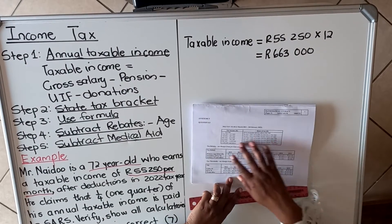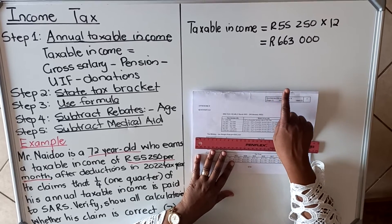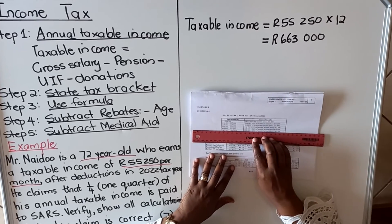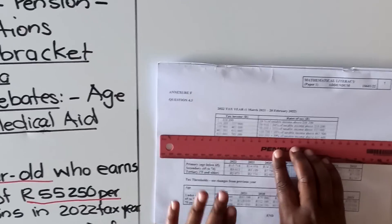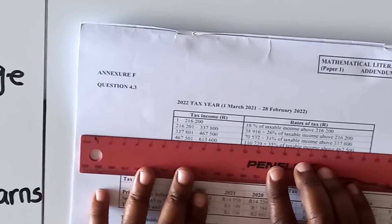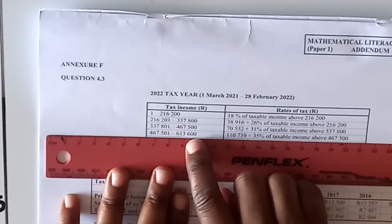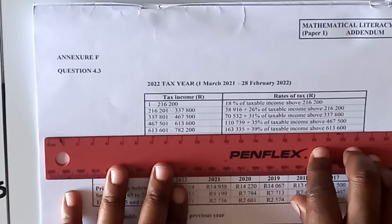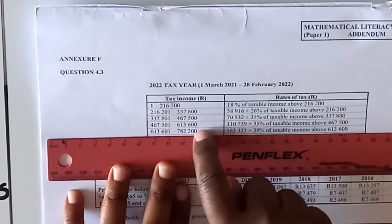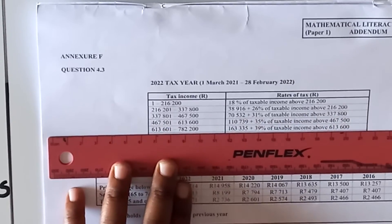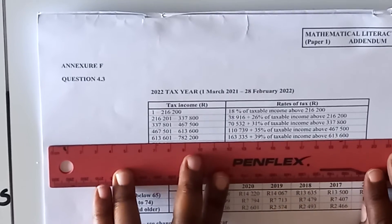Step two: state the tax bracket. We go to our tax rates table and look for where R663,000 falls. The last bracket starts at R631,000 and the next boundary is R680,000, so R663,000 falls within that bracket. That is your tax bracket.